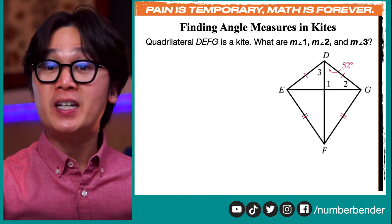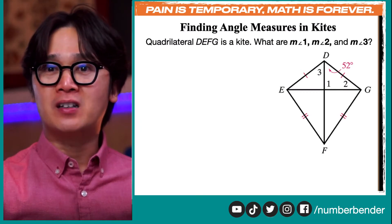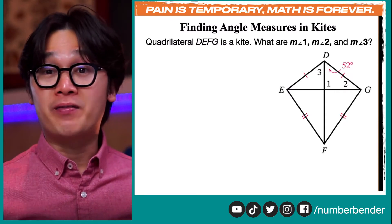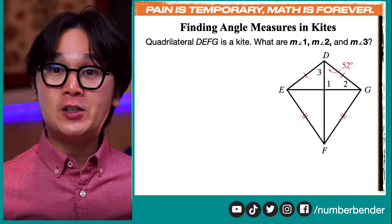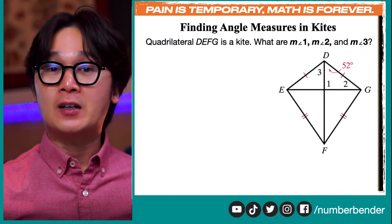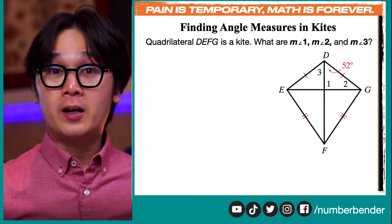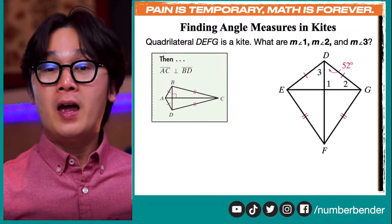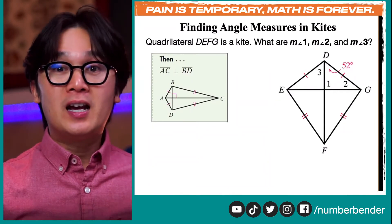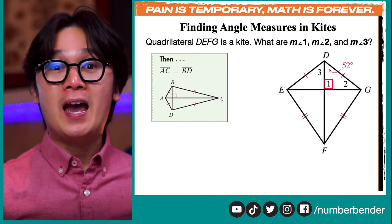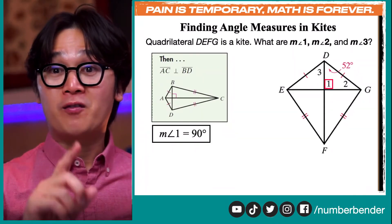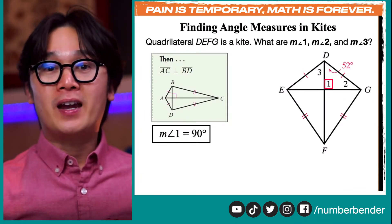Now we'll work on kite DEFG. We're given the measurement of half of angle D, which is 52 degrees, and the congruent sides of the kite. We are looking for the measurement of angles one, two, and three. The easiest measurement to find is angle one, using the perpendicular bisector theorem. If we connect DF and EG, we produce a perpendicular bisector, so the measurement of angle one is 90 degrees.